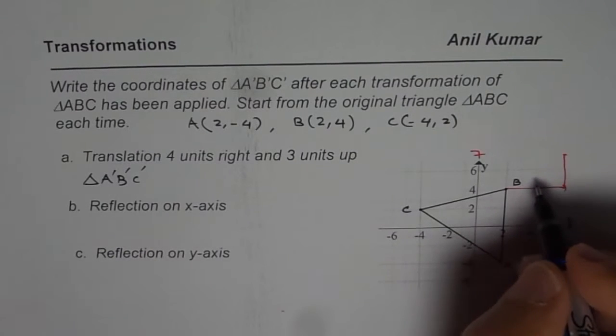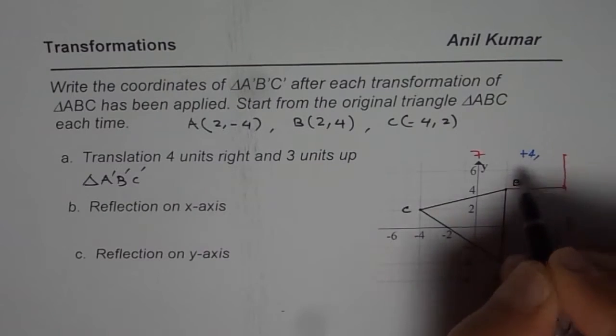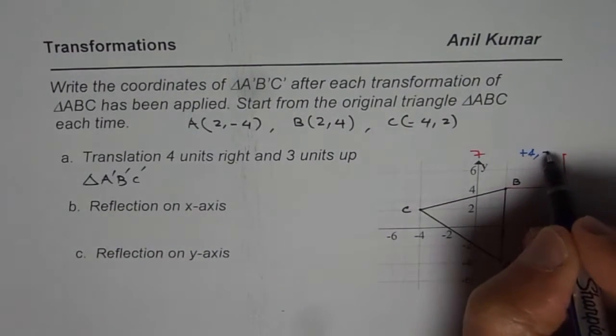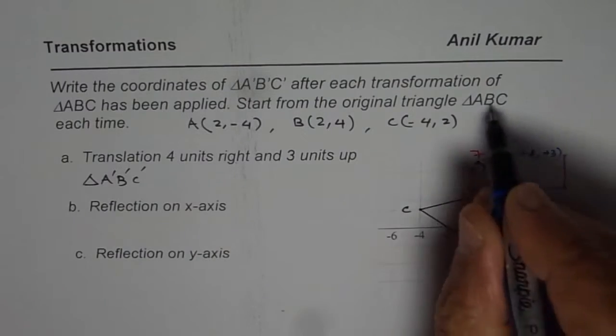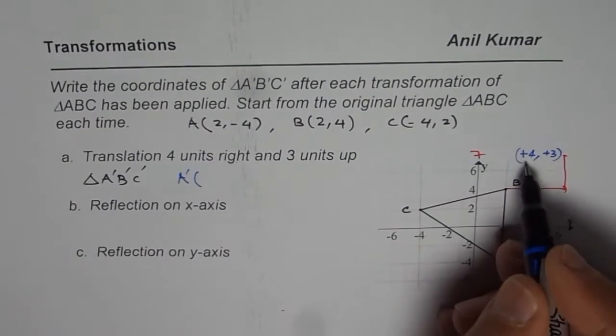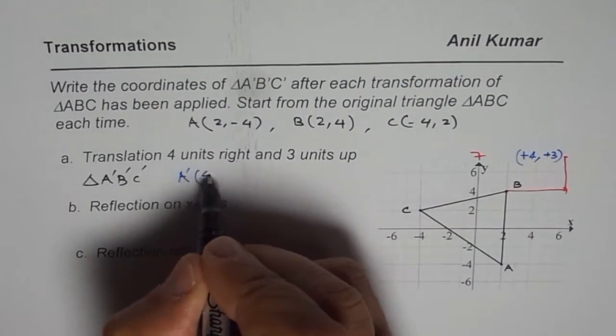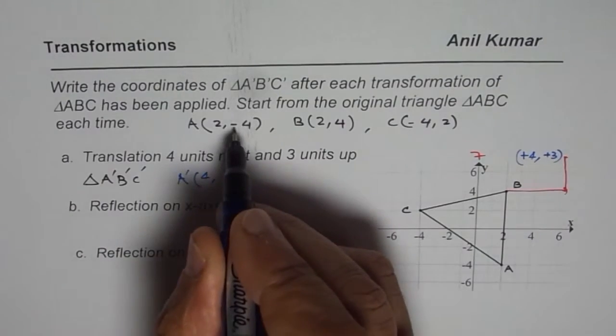Translations will result in addition of 4 units to the x values, that is 4 units right, and addition of 3 units to y values. So the new points will be: A' will be 4 and -1.